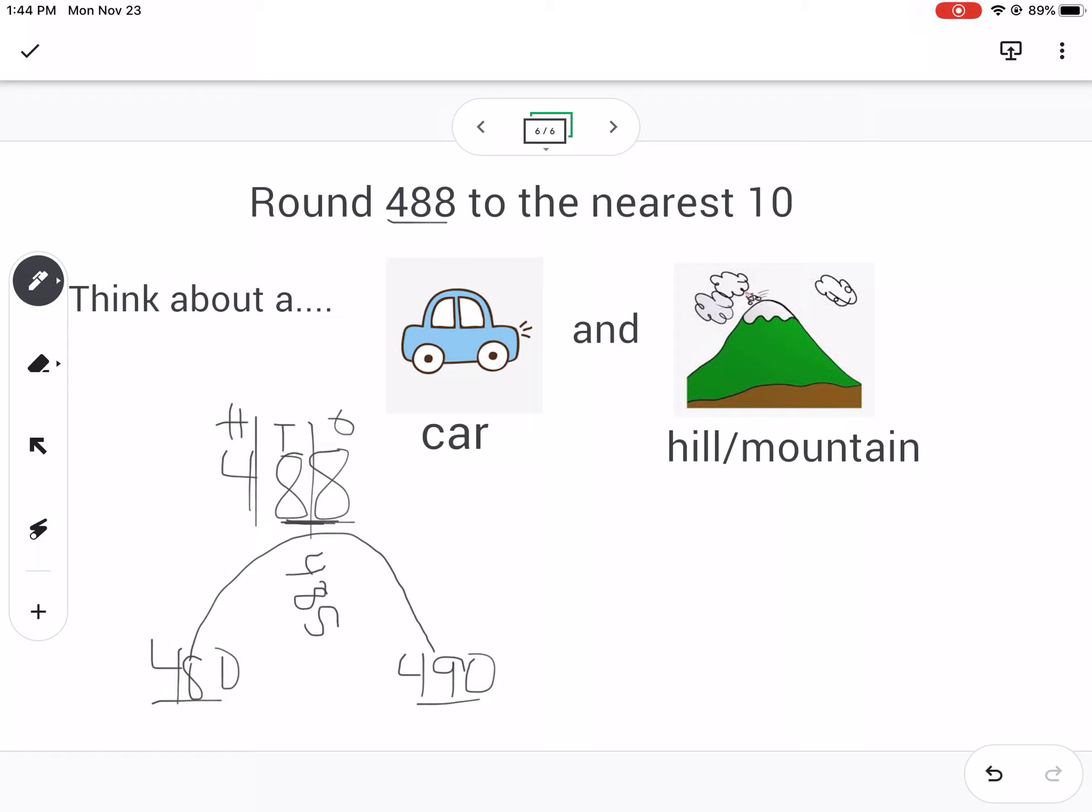And this is 488. So that's bigger than 485. So 488, if here's a car, if I let the car go, take off my brake, it's going to go down to 490. It's not going to go magically back up and down the hill to 480. So 488 would round to 490.